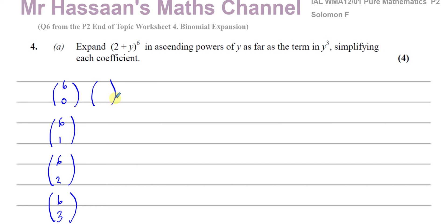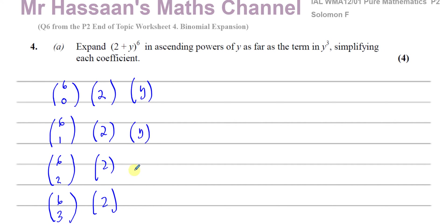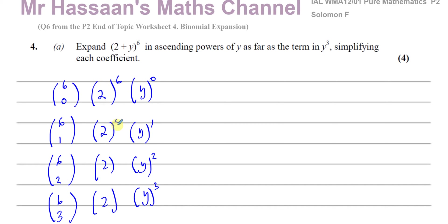The second bracket contains the term 2, and the other bracket contains y. You have to raise these to powers that must add up to 6. We want ascending powers of y, so y starts at power 0 and increases: 0, 1, 2, and 3. The power of 2 starts at the highest and goes down: 6, 5, 4, and 3. So 3 plus 3 is 6 — all powers add up to 6.